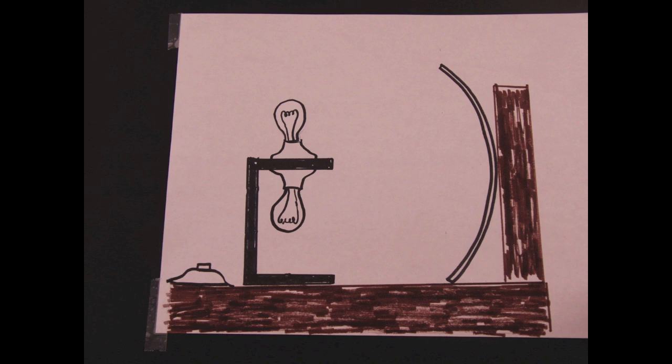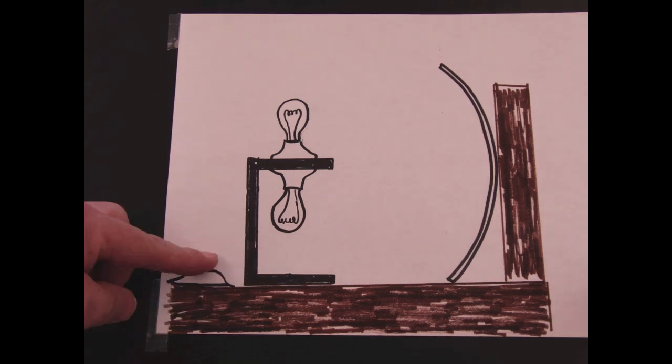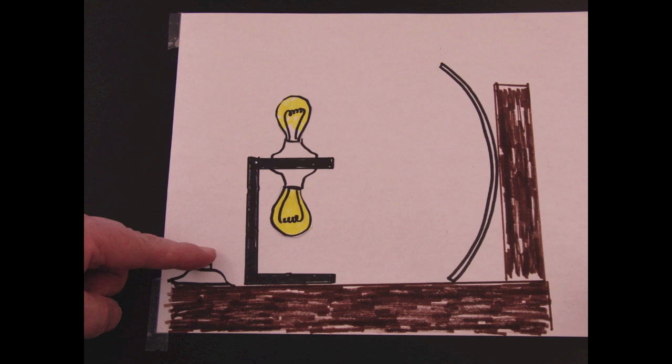Here's a simplified version of what's actually going on. Here we see the two bulbs. They're not lit. I push down on the button. They both come on, but we don't see that second bulb.